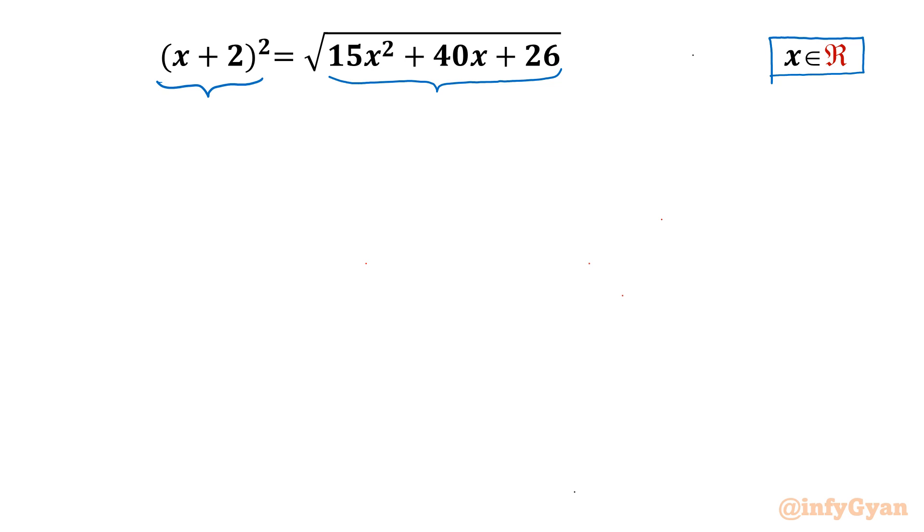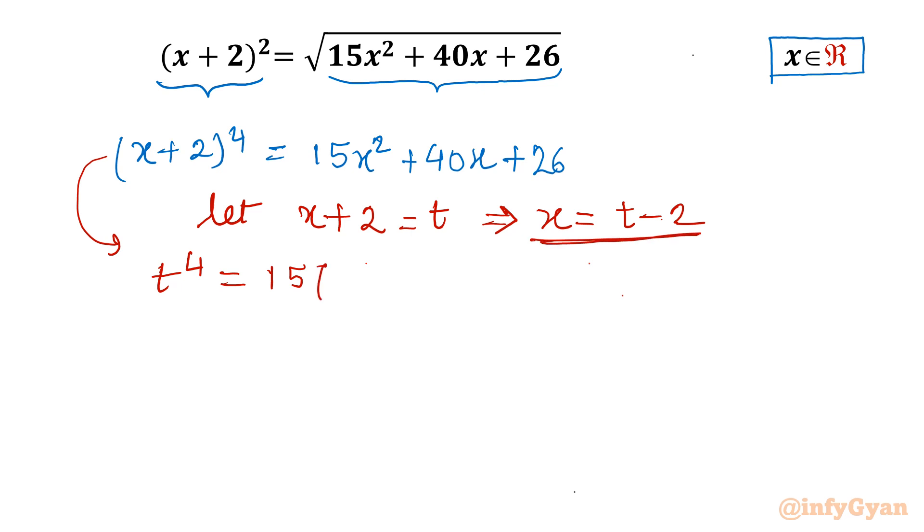So let's get started straight away. I will remove this square root from RHS by taking squaring both sides. So this will become (x+2)⁴ = 15x² + 40x + 26. Now I will use substitution. So I will write let x+2 = t. So our equation will become t⁴ equals 15x². So from this equation we can write x = t-2. We will apply x = t-2 to our equation.